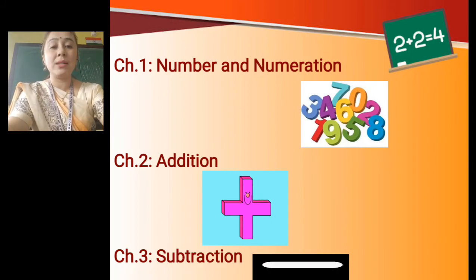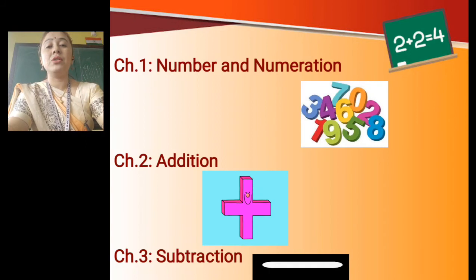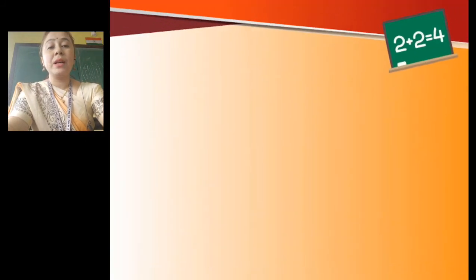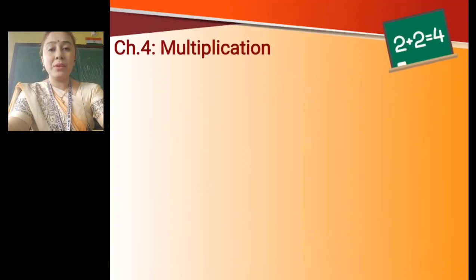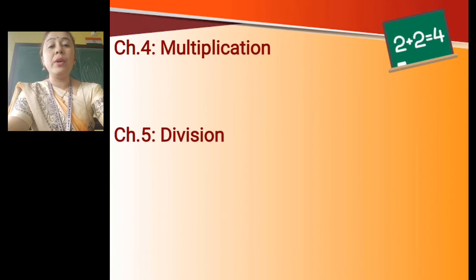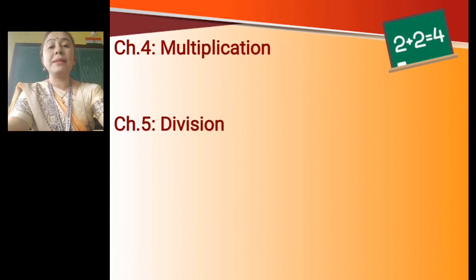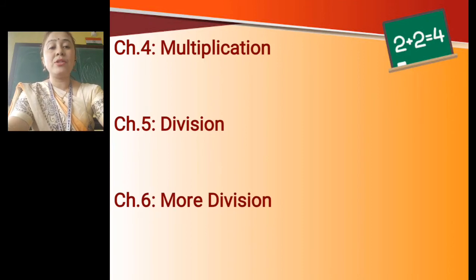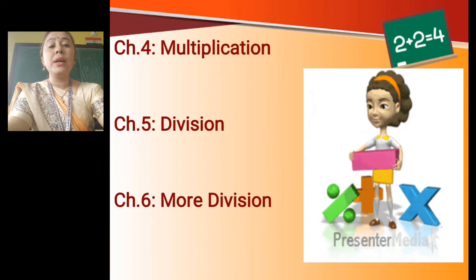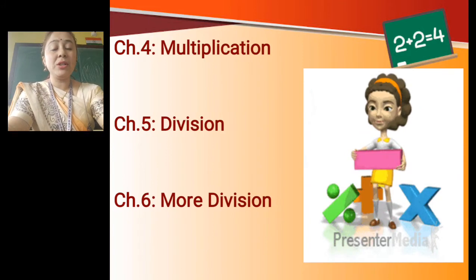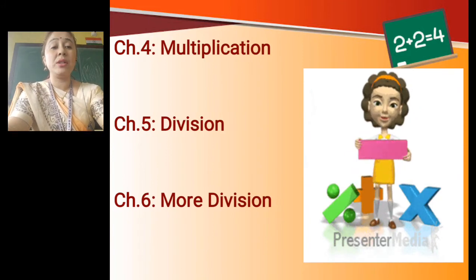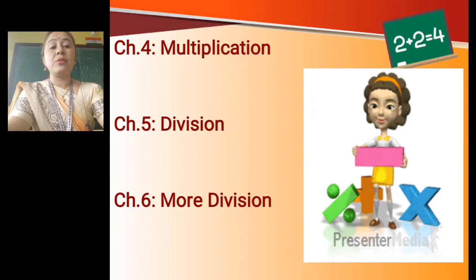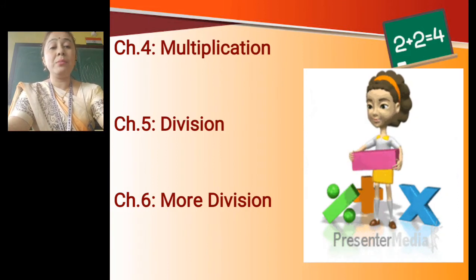So to summarize: Chapter 1 is Number and Numeration, Chapter 2 is Addition, Chapter 3 is Subtraction. Chapter 4 is Multiplication, where we will learn to multiply numbers. Chapter 5 is Division, and Chapter 6 is More Division. You can see in the picture the signs of multiplication, division, subtraction, and addition — all the signs are given in the picture.